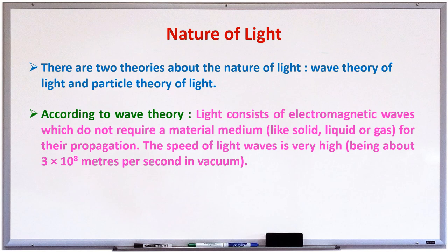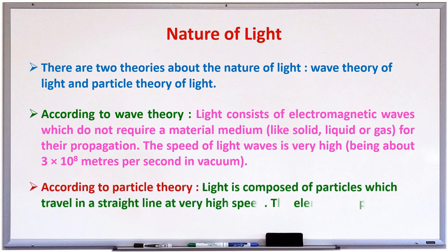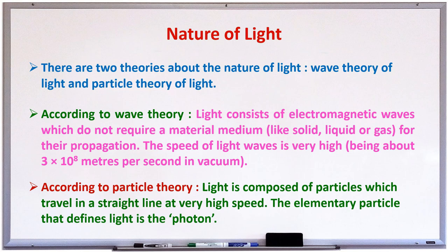But another theory is also there. According to the particle theory of light, light is composed of particles which travel in a straight line at a very high speed. This elementary particle is called a photon.